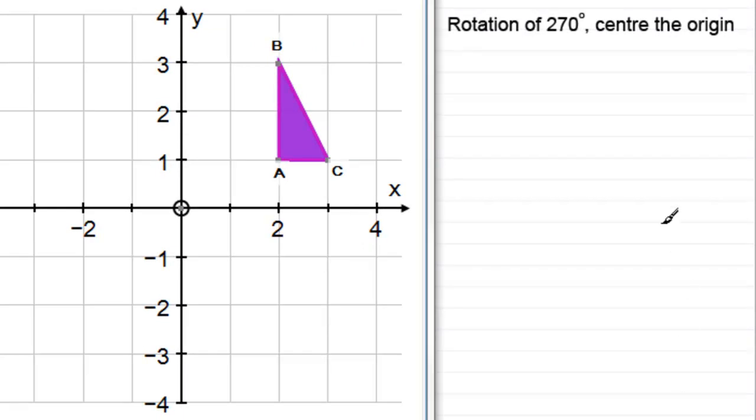In this video, what I'm going to do is show you how we can compile the matrix that represents a rotation of 270 degrees about the origin. And this is a positive angle and that represents an anticlockwise rotation about the origin.